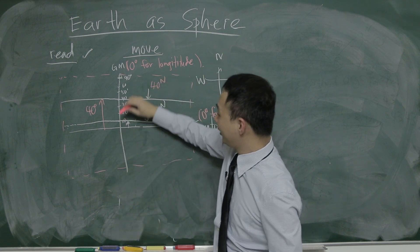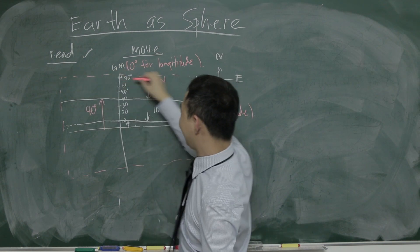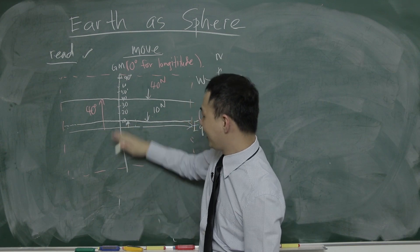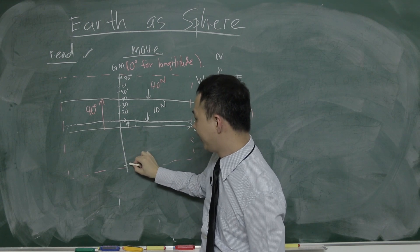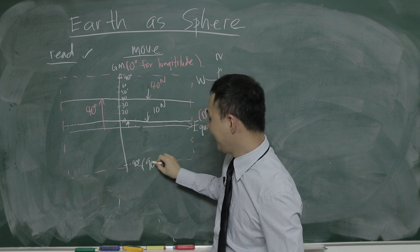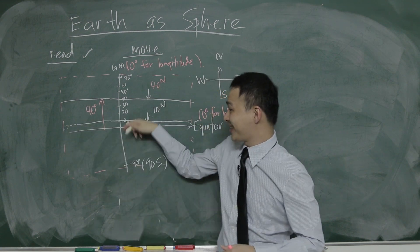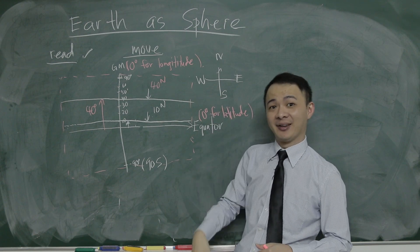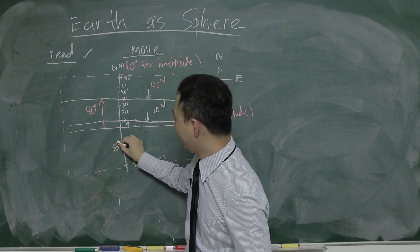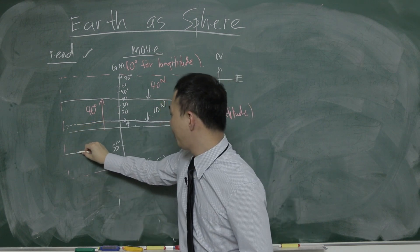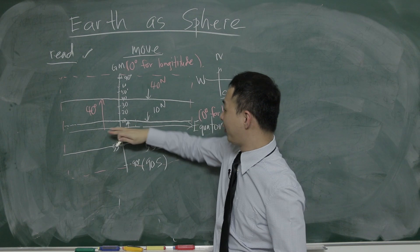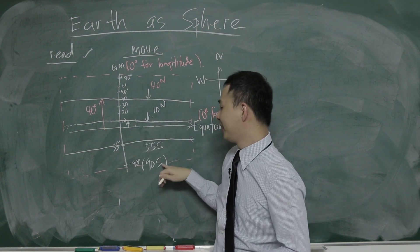If from the equator I go all the way to 90, the last line we call 90 North. From the negative side, basically the last angle here is negative 90, or we call it 90 South. Because from the equator we're going to the south — south is going down. So if it's 55 degrees from the equator going down, this line we call 55 South.